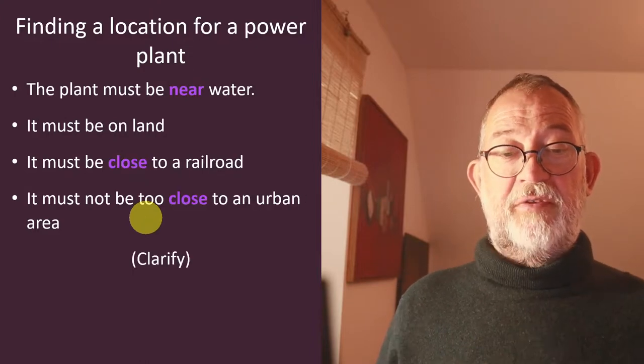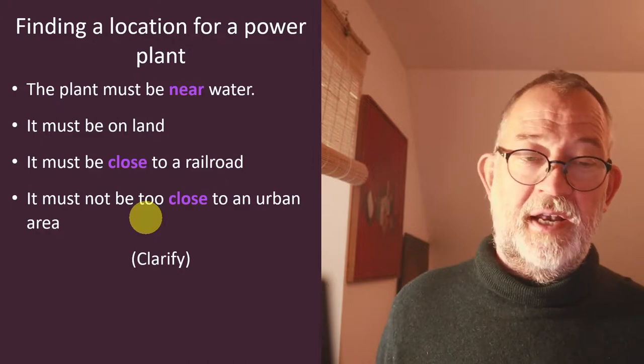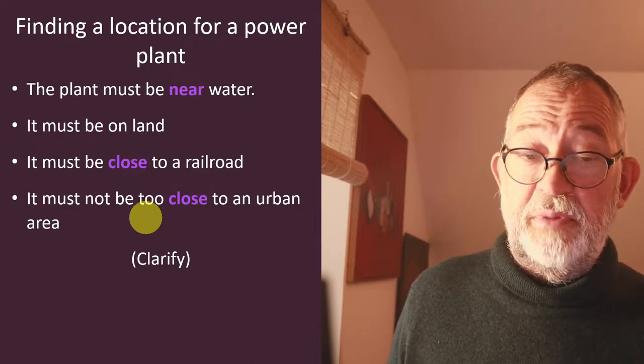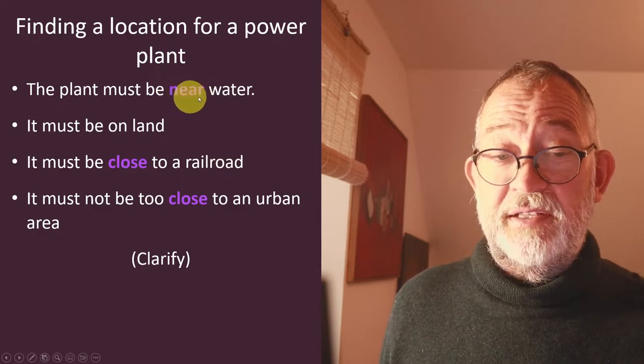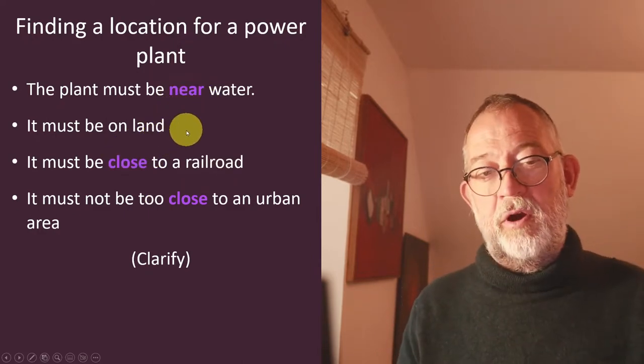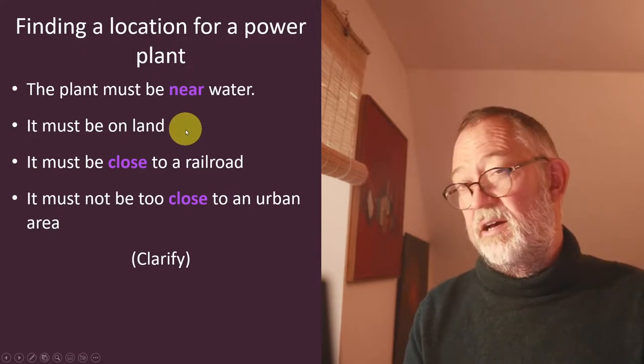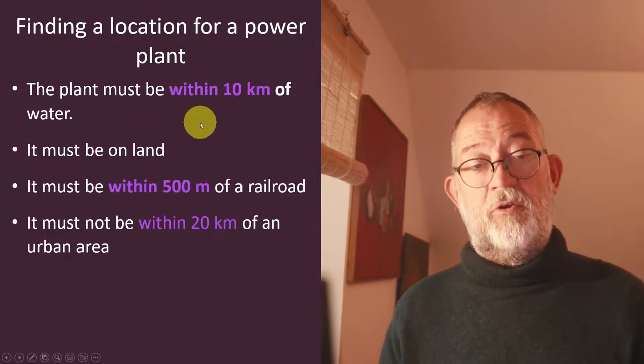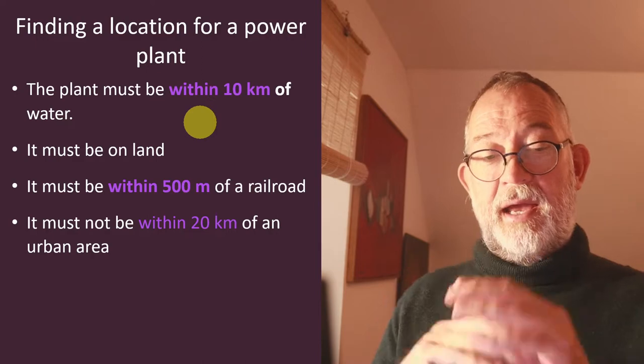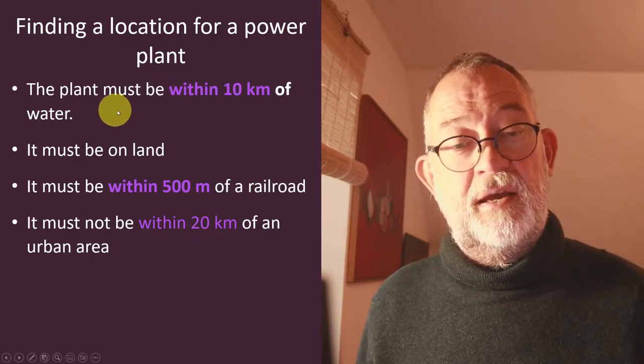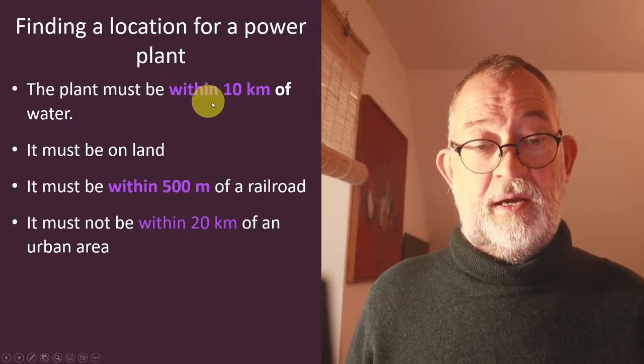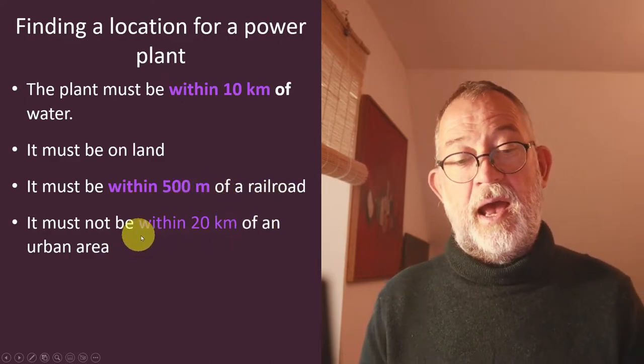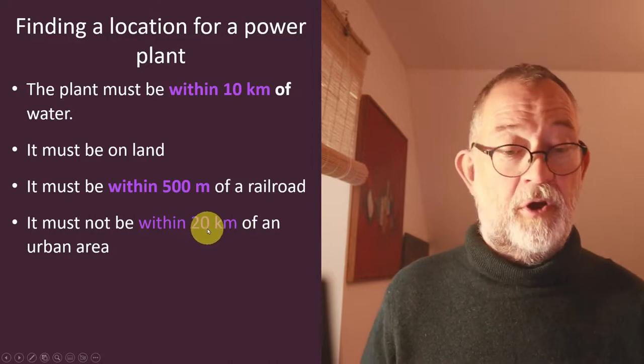The first thing we need to do is that some of these things are a bit unclear, so we have to clarify, make sure that everything can be understood uniquely. Things like near and close doesn't really work. So let's say in this case that the power plant must be within 10 kilometers of water, and it must be within 500 meters of railroad, and it mustn't be within 20 kilometers of an urban area.